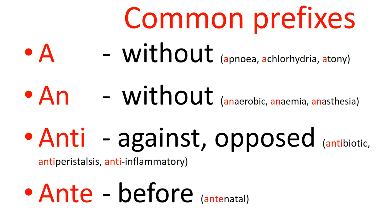There could also be uterine atony — loss of tone in the uterine musculature after childbirth. Normally it's the contraction of the uterine muscle which compresses the vessels and reduces blood flow. So if there's uterine atony after childbirth, there can be more bleeding because the bleeding vessels are not clamped down on. So 'a' in front of a word simply means without.